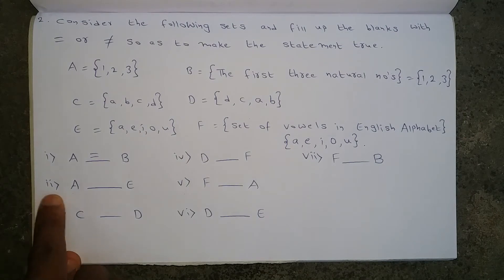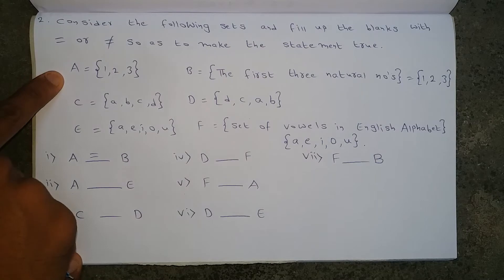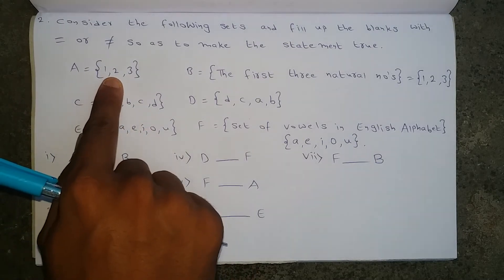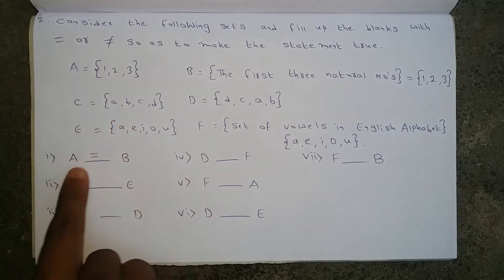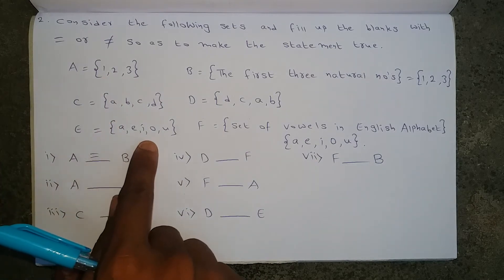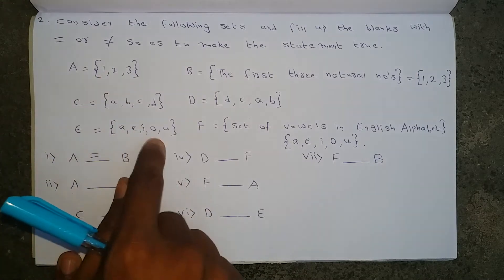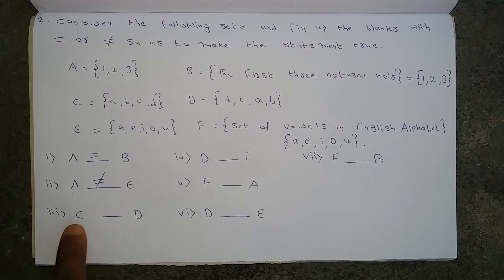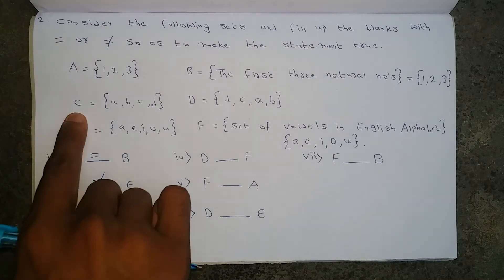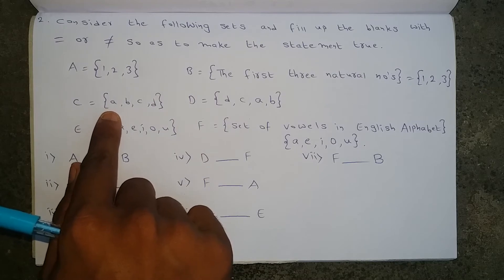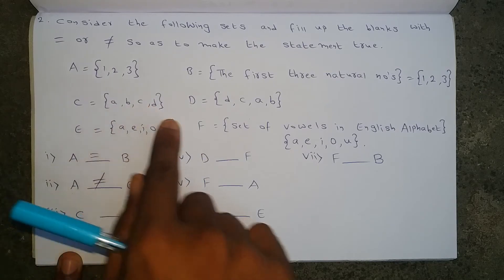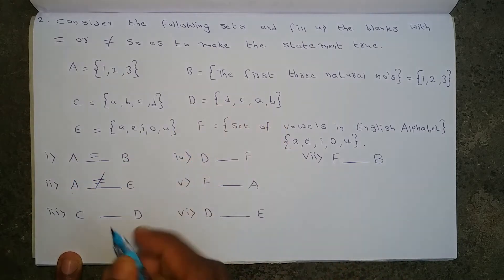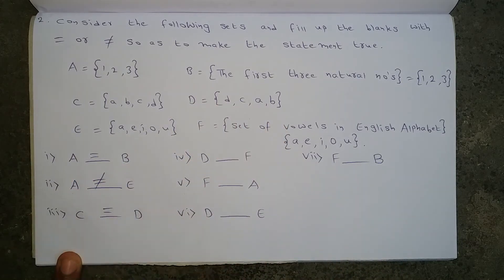Next, set A and set E: set A consists of numbers and set E consists of alphabets, which are completely different. So set A is not equal to set E. Next, set C and set D: set C has four elements A, B, C, D and set D also contains the same elements A, B, C, D. So set C is exactly equal to set D.